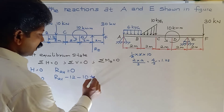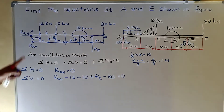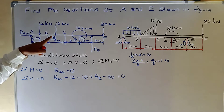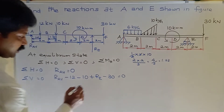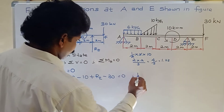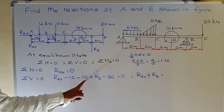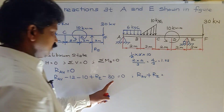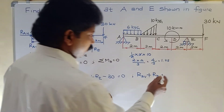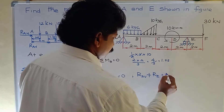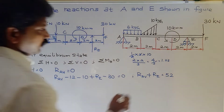From Sigma V = 0: RAV + RE − 12 − 10 − 30 = 0, which simplifies to RAV + RE = 52 kN. Take this as Equation 1.